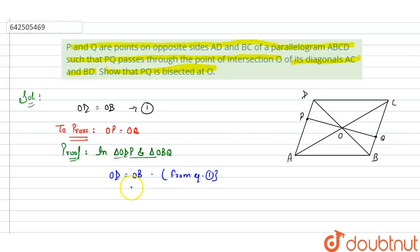And angle POD, this one angle is equal to this angle. Angle 1 is equal to angle 2. These are vertically opposite angles.